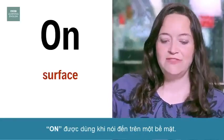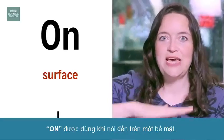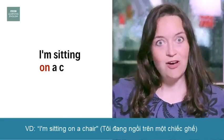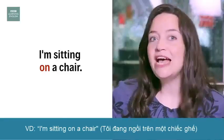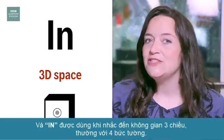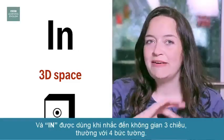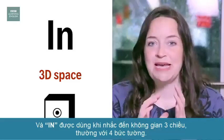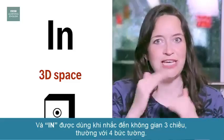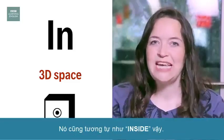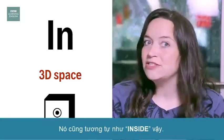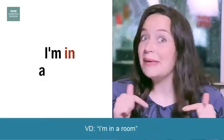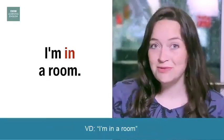On is used in relation to a surface. I'm sitting on a chair. And in is used to talk about a three dimensional space, usually with four walls. It's similar to inside. I'm in a room.